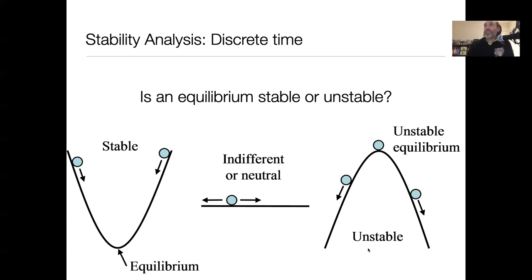An important thing to know for models is that whenever there are multiple equilibria, there's going to be some that are stable and some that are unstable, and there's a tendency for them to alternate — for reasons that will become clearer once we start diving into the graphical analysis of equilibria.